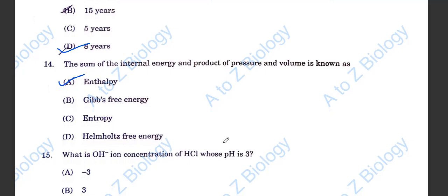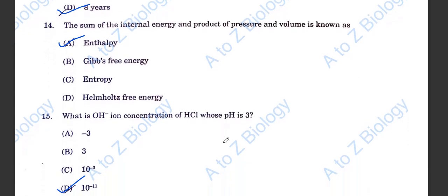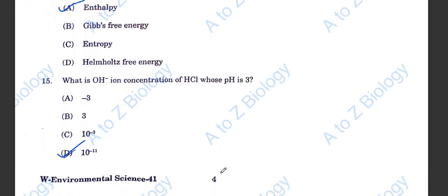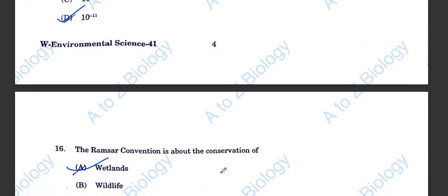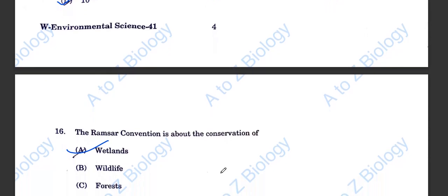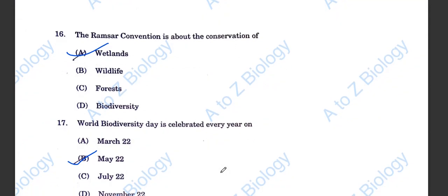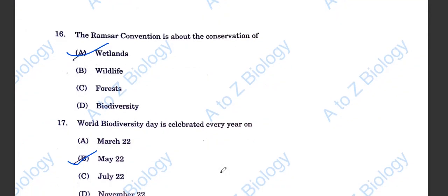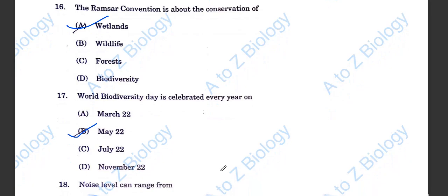The sum of the internal energy and product of pressure and volume is known as enthalpy. What is OH minus ion concentration of HCl whose pH is 3? The answer is 10 to the power minus 11. Question number 16. The Ramsar Convention is about the conservation of wetland.